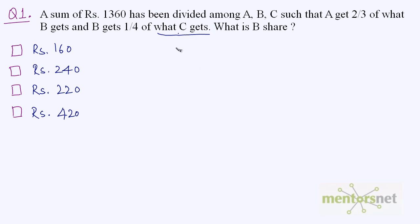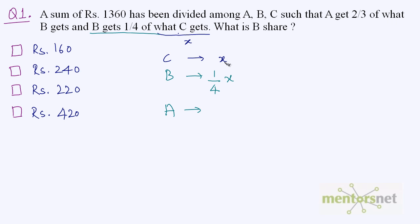Let us consider that C gets X rupees from the total of 1360. It is written that B gets one-fourth of what C gets, so B gets one-fourth of X. A gets two-thirds of what B gets, so A gets two-thirds of one-fourth of X, which gives us one-sixth of X.